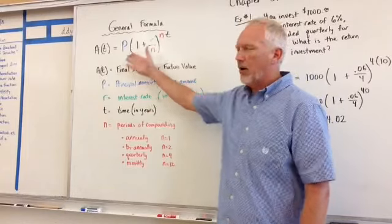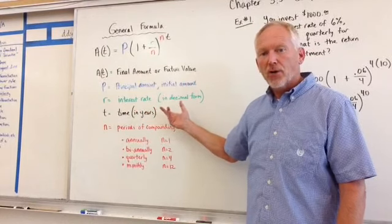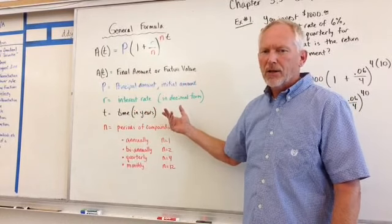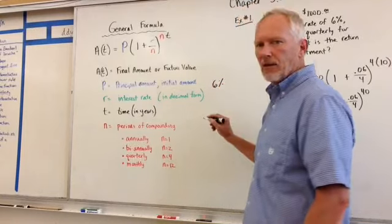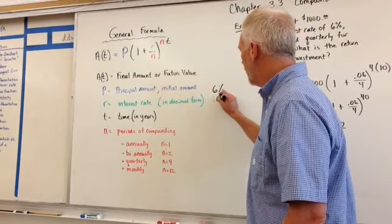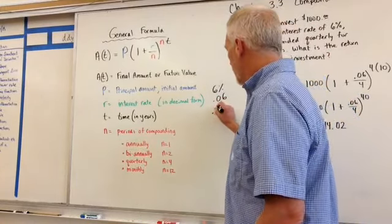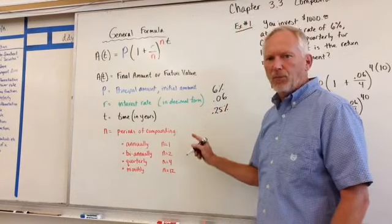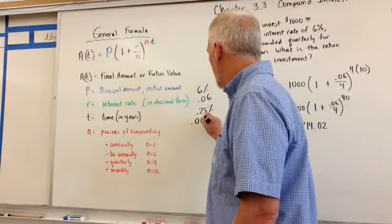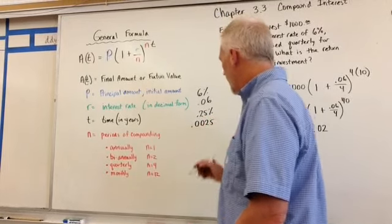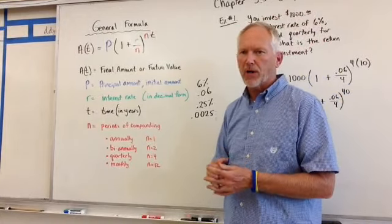P is the principal amount, meaning the initial amount. How much did I put into that investment? R is the interest rate. Now, remember, the interest rate always has to be in decimal format. So if it were, say, six percent, then we would want to express that as point zero six in decimal form. So if it says point two five percent, a quarter of a percent, then we would want to express that as point zero zero two five in terms of a decimal. So a couple of things to look out for when we do these problems. How do we express the percent?